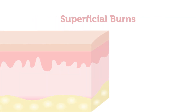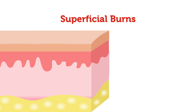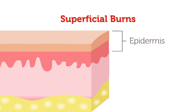Here's a closer look. Let's start with a superficial burn. This type of burn affects the top layer of skin, the epidermis. This layer is the outermost layer of skin, providing a waterproof barrier and creating our skin tone.